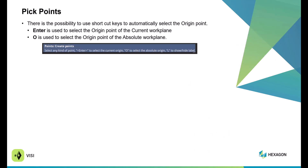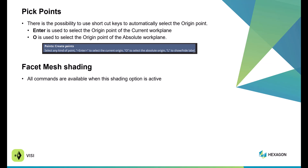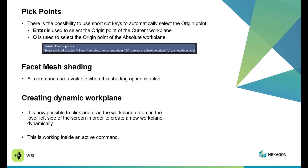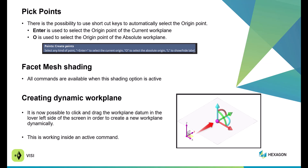Within Pick Point, it is now possible to press the Enter key to automatically have that point displayed on the current workplane, and the O key if you want it to display on the Absolute. Within Facet Mesh Shading, all commands are available within this shading option — they are no longer grayed out. You now have the ability to dynamically create a workplane by highlighting the workplane on the bottom left corner and doing a simple drag, which brings up the automatic workplane orientation.